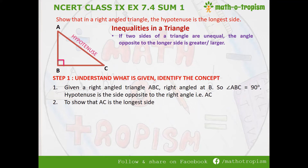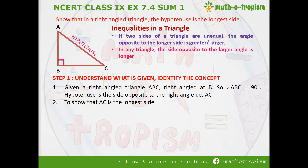That means when there are unequal sides, the largest angle will be opposite to the largest side of the triangle. Next, in any triangle, the side opposite to the larger angle is longer — meaning if one angle is the greatest, then the side opposite to that greatest angle will be the longest. The third theorem states: the sum of any two sides of a triangle is greater than the third side.